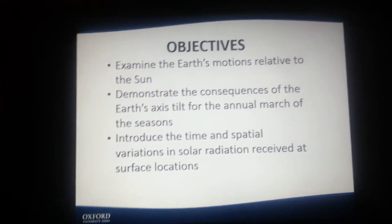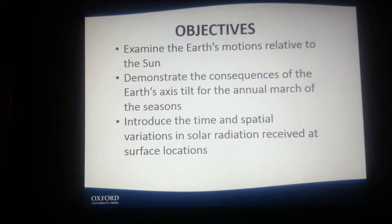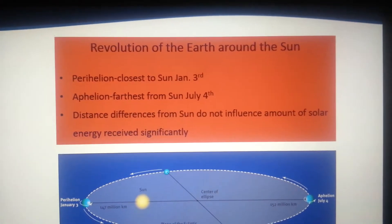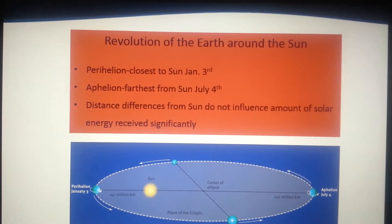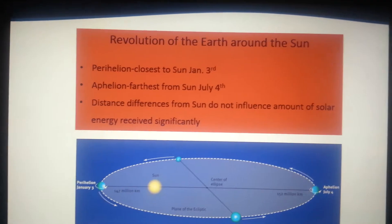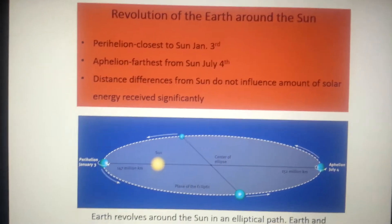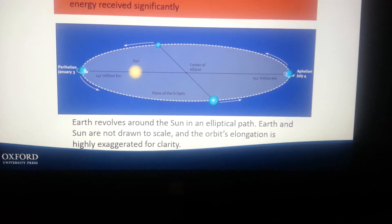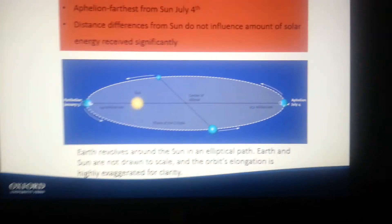The objectives are: examine the Earth's motions relative to the Sun, demonstrate the consequences of the Earth's axis tilt for the annual march of the seasons, and introduce the time and spatial variations in solar radiation received at surface locations. Revolution of the Earth around the Sun: perihelion is closest to the Sun on January 3rd; aphelion is farthest from the Sun on July 4th, which is the opposite of what we might think. Distance differences from the Sun do not significantly influence the amount of solar energy received. The Earth revolves around the Sun in an elliptical path, and the orbit's elongation is highly exaggerated for clarity — it's actually quite smaller.